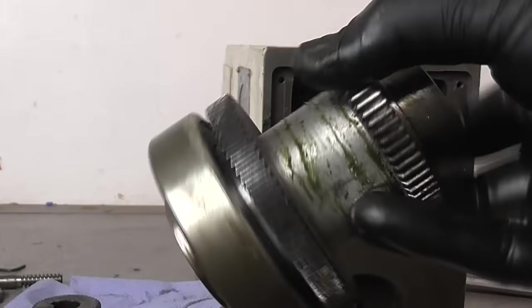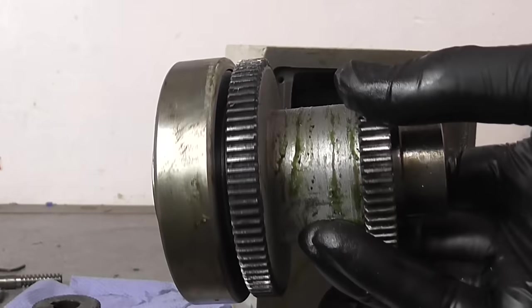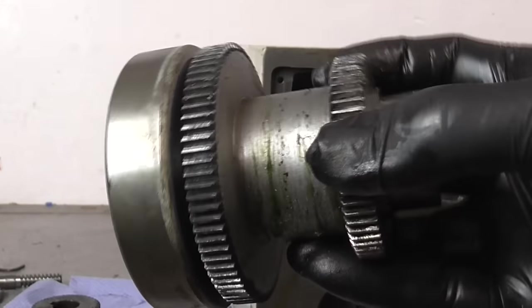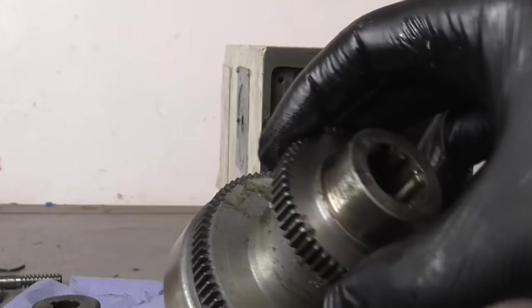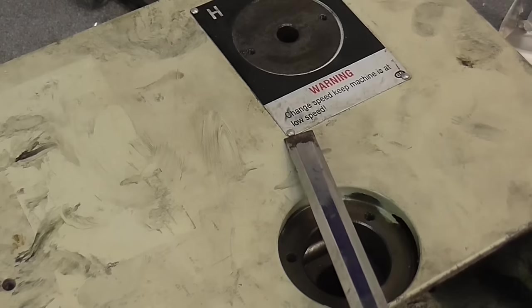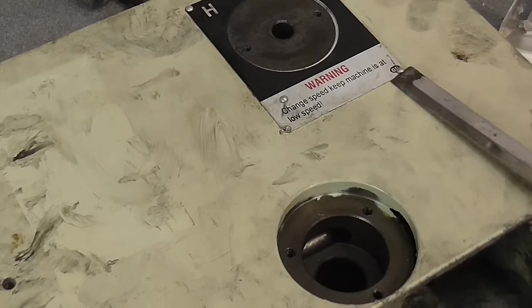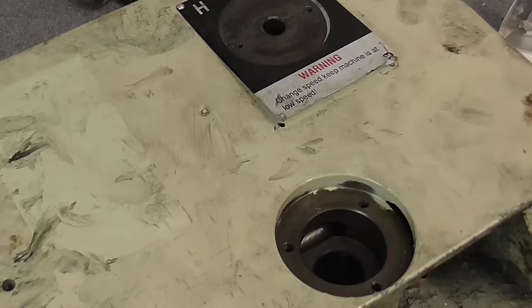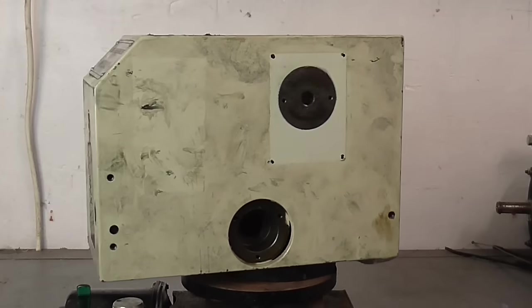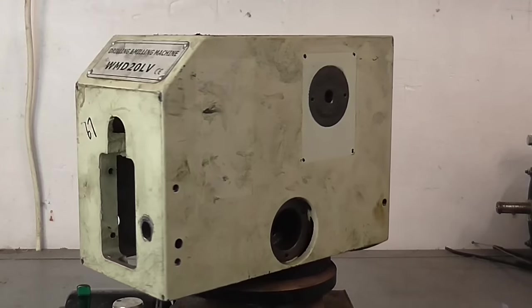This is the splined shaft that rotates the spindle. I'll need to keep this, but I don't need the gears. It's all machined from one piece. That's the head stripped down to the bare casting.